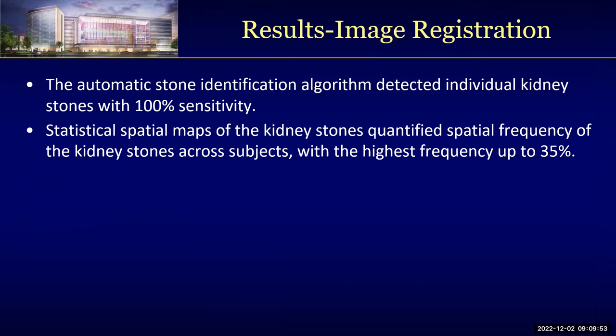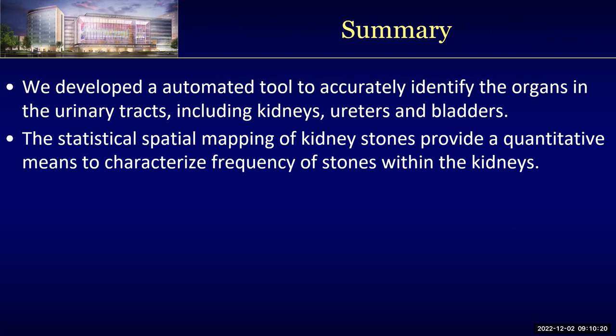Based on our registration results, the automatic stone identification algorithm detects individual kidney stones with 100% sensitivity. The statistical spatial mapping of the kidney stones quantifies spatial frequency of kidney stones across subjects, with the highest frequency up to 35%. In summary, we developed an automatic tool to accurately identify organs in the urinary tracts including kidneys, ureters, and bladders, and the statistical spatial mapping provides quantitative means to characterize frequency of stones within the kidneys.